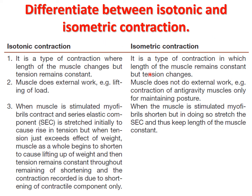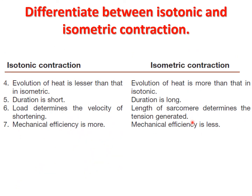In isometric contraction, when the muscle is stimulated, myofibrils shorten but in doing so stretch the series elastic component, thus keeping the length of the muscle fibers constant. In isotonic contraction, evolution of heat is lesser than in isometric contraction, where heat evolution is more. In isometric contraction the duration is long, while in isotonic it is short. In isotonic contraction, the load determines the velocity of shortening, whereas in isometric contraction, the length of the sarcomere determines the tension generated. Mechanical efficiency is more in isotonic and less in isometric contraction.